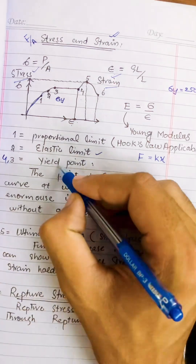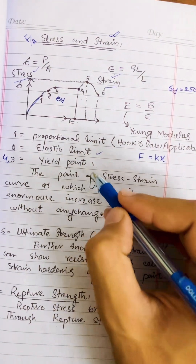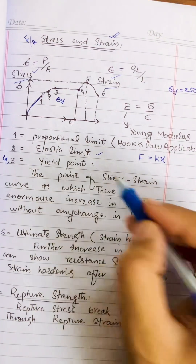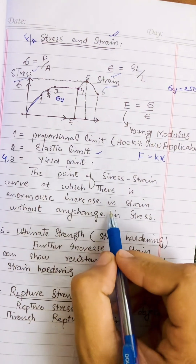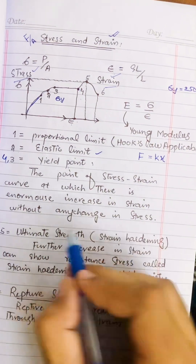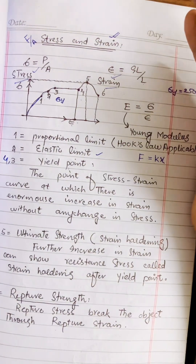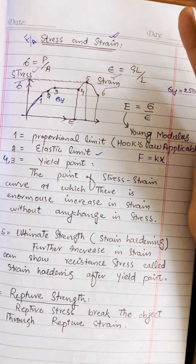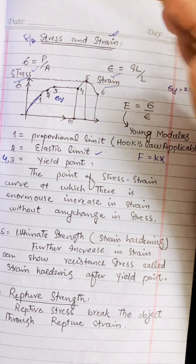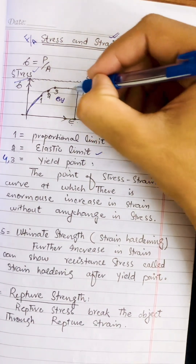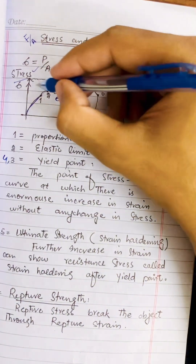The third point is the yield point, which is very important. The yield point is the point on the stress-strain curve at which there is an enormous increase in strain without any change in stress. This means you don't need to increase stress, yet strain increases enormously.